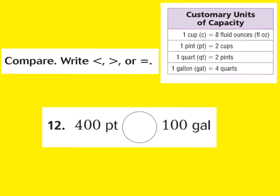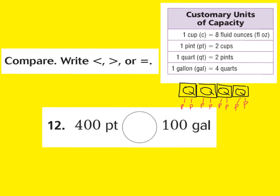Let's look at number 12, comparing pints and gallons. As we found earlier, there are 4 quarts in 1 gallon and 2 pints per quart, giving us 8 pints per gallon. Converting 100 gallons to pints: 100 times 8 equals 800 pints. Comparing 400 pints to 800 pints, obviously 800 pints is greater, which also equals 100 gallons.